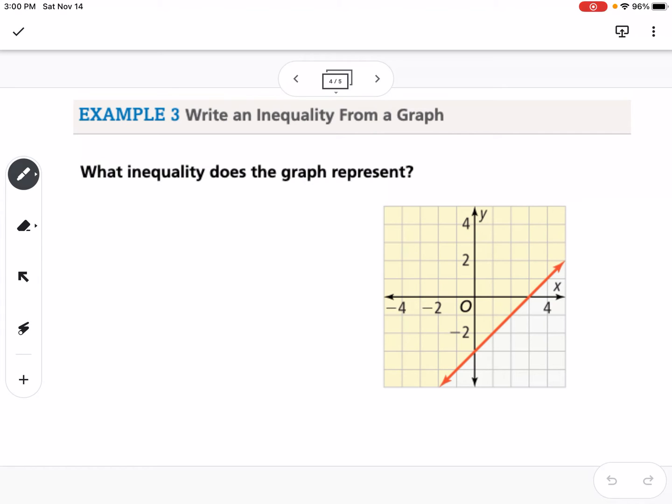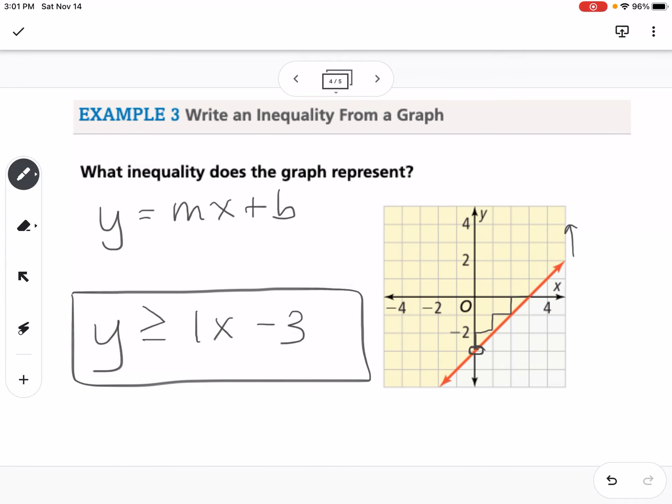Our next example is how do we write an inequality from a graph? So kind of like y equals mx plus b, we're going to use that to fill in our inequality. So I'm going to keep the y, I want to figure out the slope, so if you look here, we're going up 1 over 1, up 1 over 1, so that means my slope is going to be a positive 1 with x, and then my y-intercept is down here at negative 3. So that's the equation part. Now we have to figure out what direction to make the inequality symbol. So you'll notice that we shaded above the line. That tells me that y is greater than. And then notice that the line is a solid line, which tells me it's going to be greater than or equal to. So this right here would be the inequality for that graph.